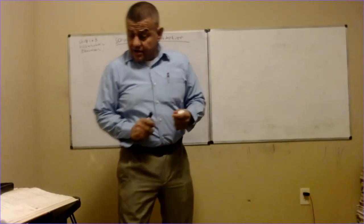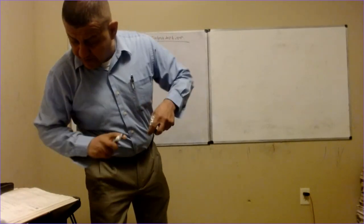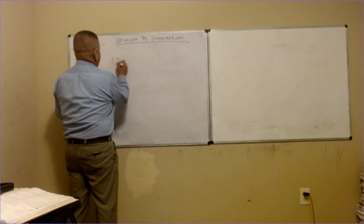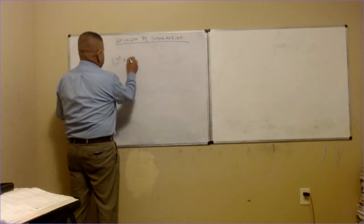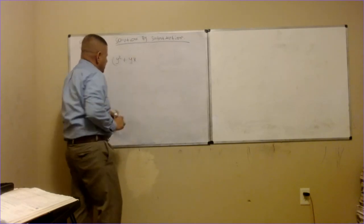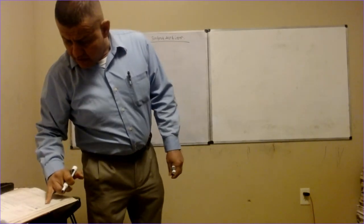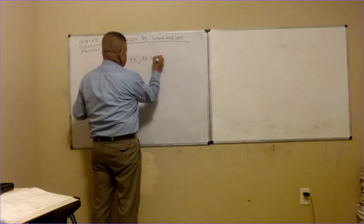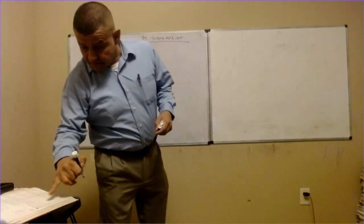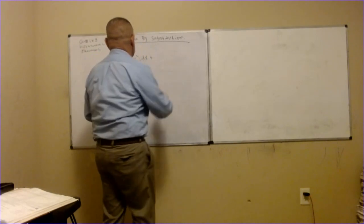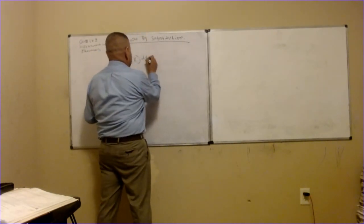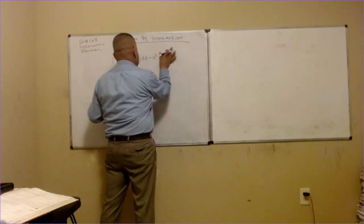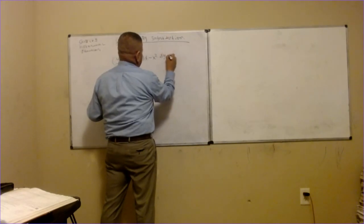Okay, so let's get started with this problem. We have y squared plus yx, inside a parenthesis, times dx, and then we have minus x squared, times dy, equals zero.